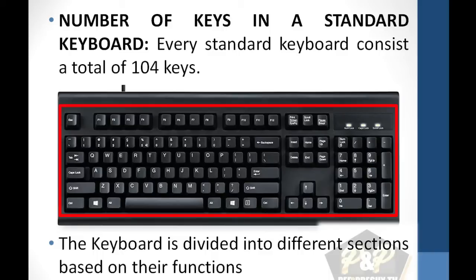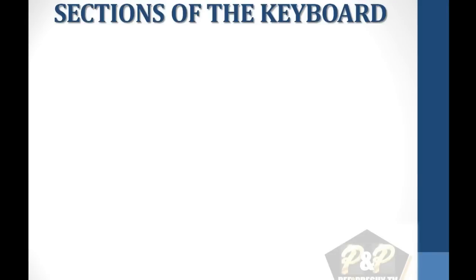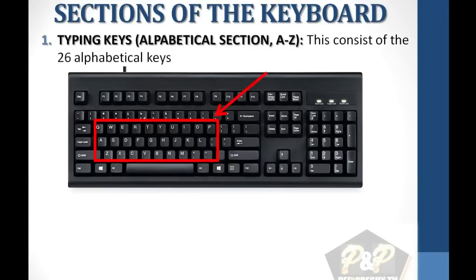The keyboard is divided into different sections based on their functions. Sections of the keyboard include: 1. Typing keys — this is the alphabetical section of the keyboard, that is the alphabet A to Z. This section consists of the 26 alphabetical keys.